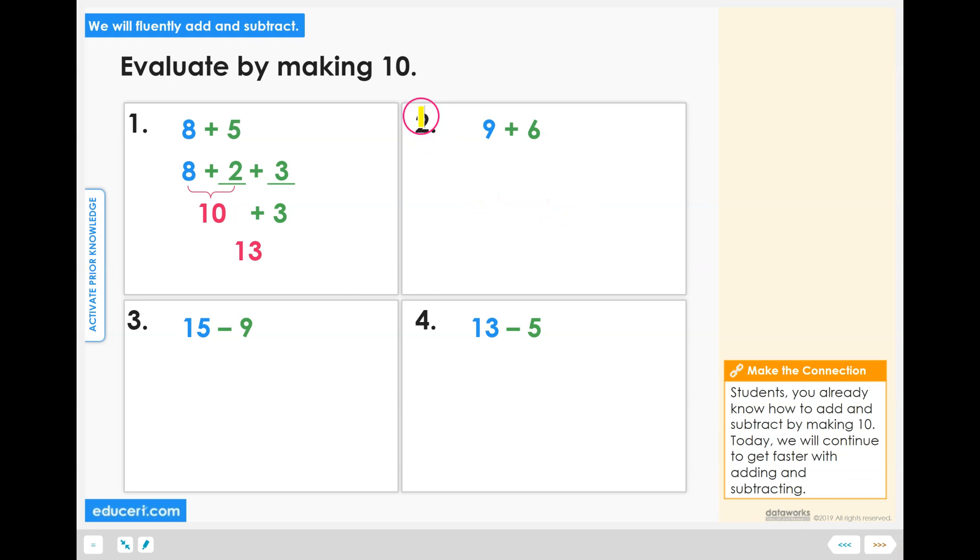I'll give you a moment to evaluate by making 10 for 9 plus 6. 9 plus 1 will make 10, which means we break the 6 into 1 plus 5. After you add 9 plus 1 which equals 10, you add 5 more and your result is 15.